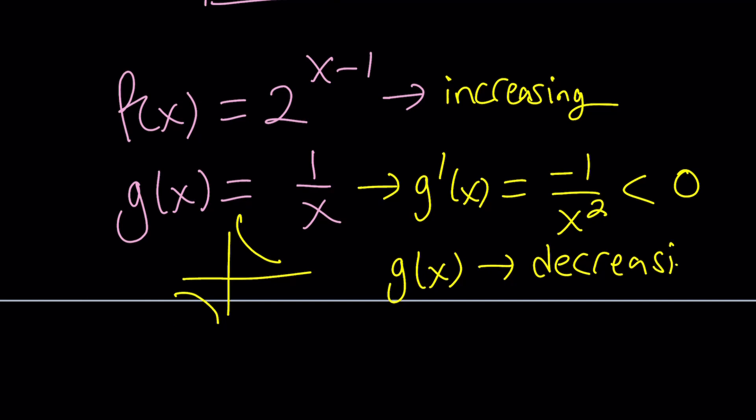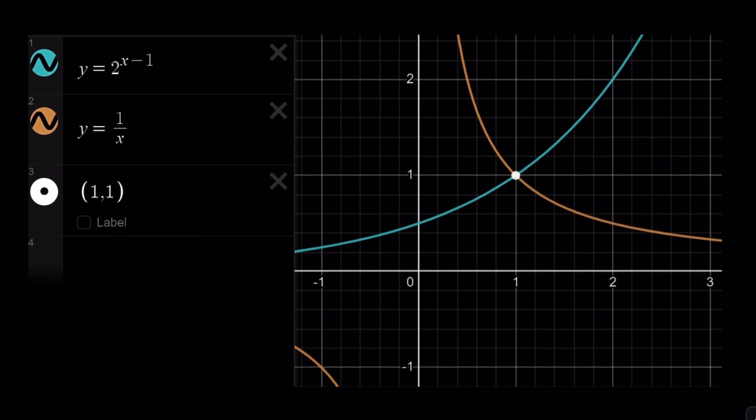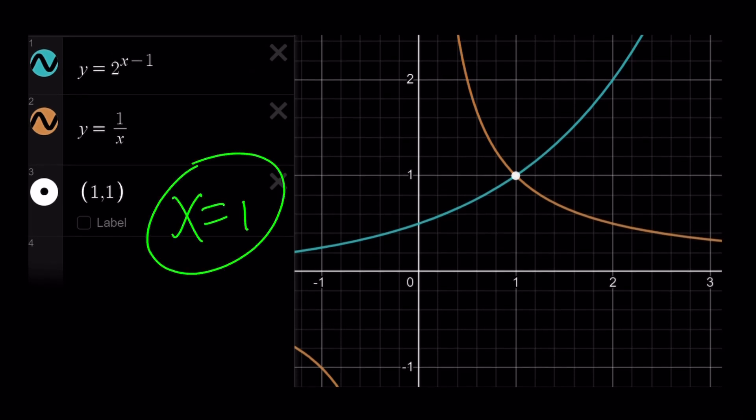So you kind of have like an increasing function and a decreasing function intersecting at a single point. Because if one of them goes up, the other one goes down, they have to intersect at a single point. And let's go ahead and take a look at the graph of these two functions. Hopefully, I made the graph. Oh, it looks like I did. Great. And as you can see here, x equals 1 is the only solution. Because they intersect at a single point as can be seen on the graph. And this brings us to the end of the video.